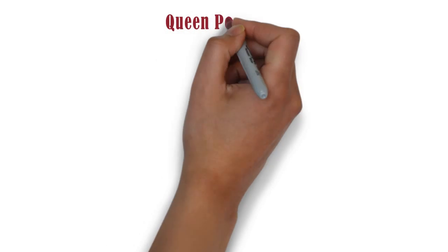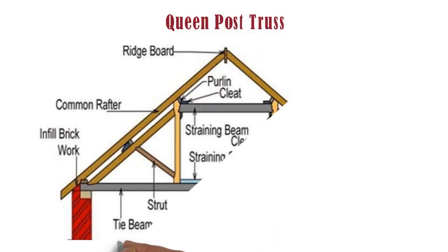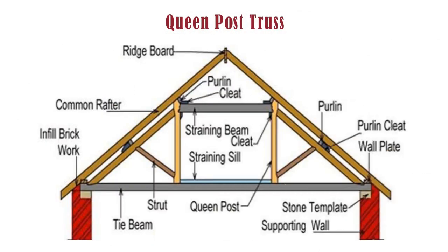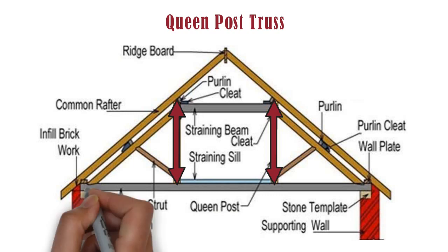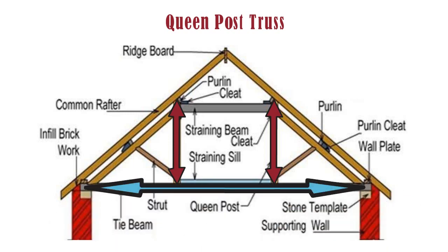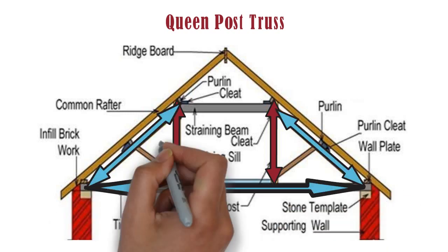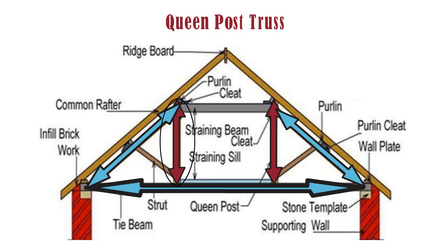On the other hand, queen post truss is defined as a pitched roof support provided with two vertical tie posts connected between the tie beam and the rafters. These two vertical posts are called as queen posts.